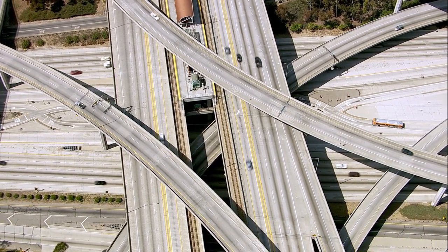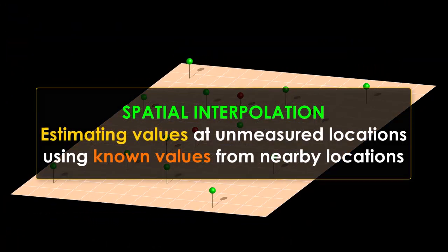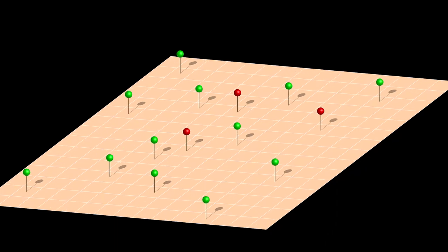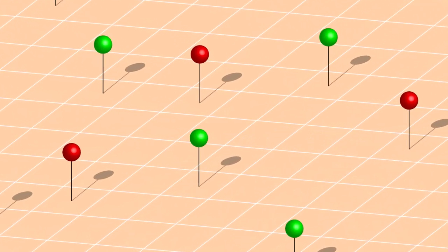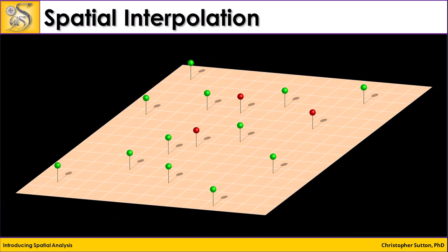What is the most likely path that a disease will spread through a population? When we do spatial interpolation, we estimate values at unmeasured locations using known values from nearby locations. Here we have a series of points in geographic space — the green points are locations where we have measured values, and the red points are ones we may be interested in estimating. It could be a pollution level, a temperature, or crop yields in a farm. With interpolation, we use these known values to determine what locations in between those values might have.